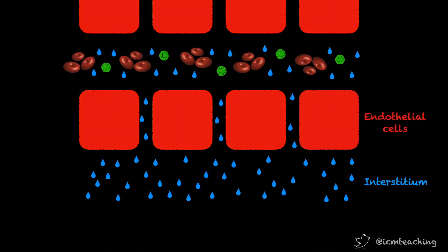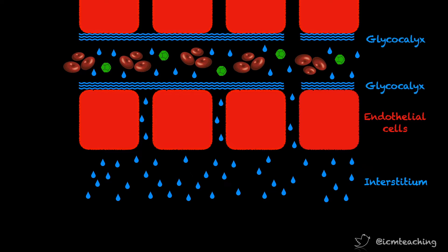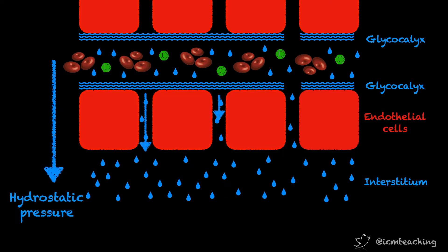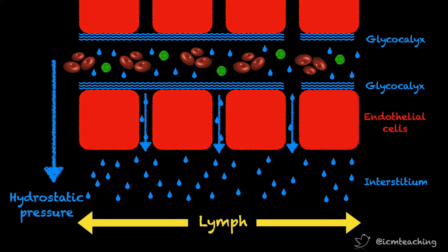We now know that capillaries are lined by a spongy layer called the glycocalyx, which contains water in a gel phase. It probably contains about 1 litre of the intravascular volume, which is not free-flowing like the rest of the plasma. We now know that capillary pressures just exceed colloid osmotic pressures down their full length, meaning that filtration of fluid from the vessels to the interstitium occurs along the whole length of capillaries — at both arterial and venous ends. No fluid is reabsorbed back into the capillaries; it is all removed by the lymphatics.